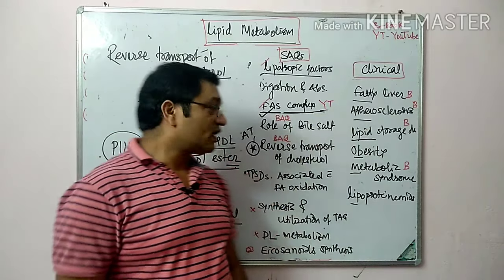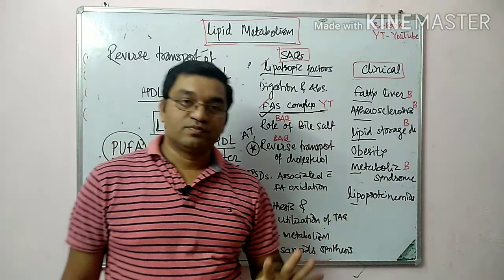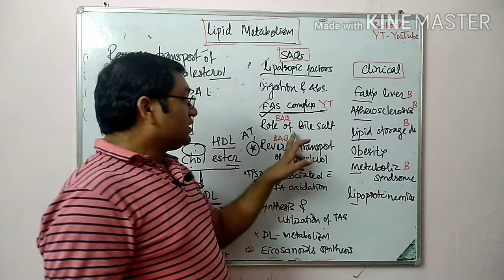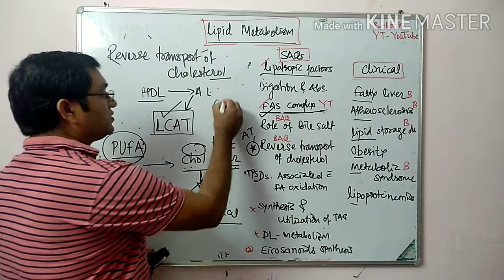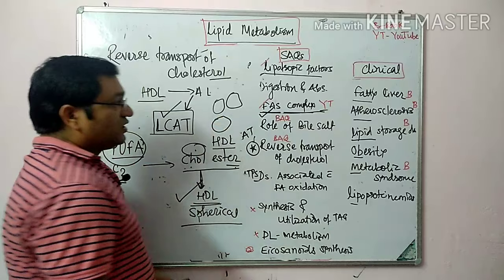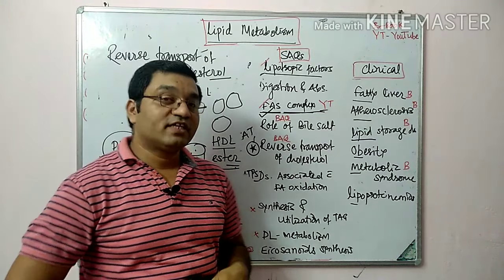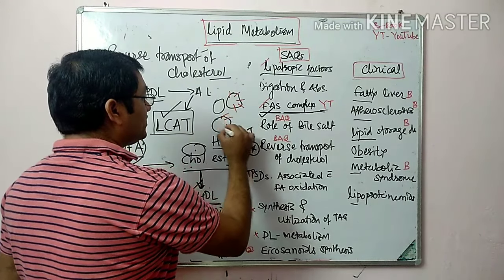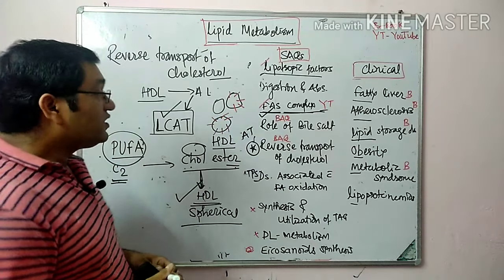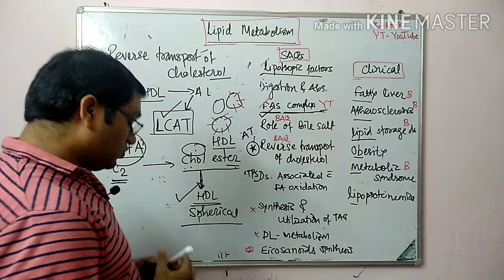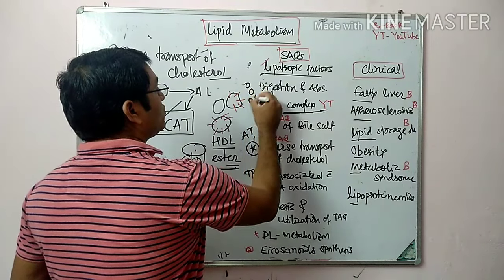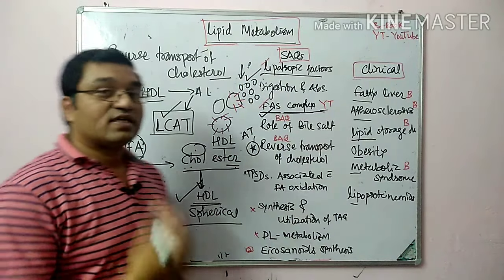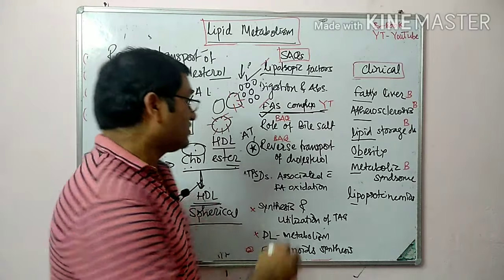The fatty acid synthase complex is composed of 7 enzymes and 1 acyl carrier protein (ACP). Regarding the role of bile salts in digestion: bile salts are amphiphilic in nature. The hydrophobic portion of bile salt intercalates into large lipid aggregates and converts these large lipid molecules into smaller ones. Their surface tension decreases and surface area increases, making more surface area available for the action of lipase.